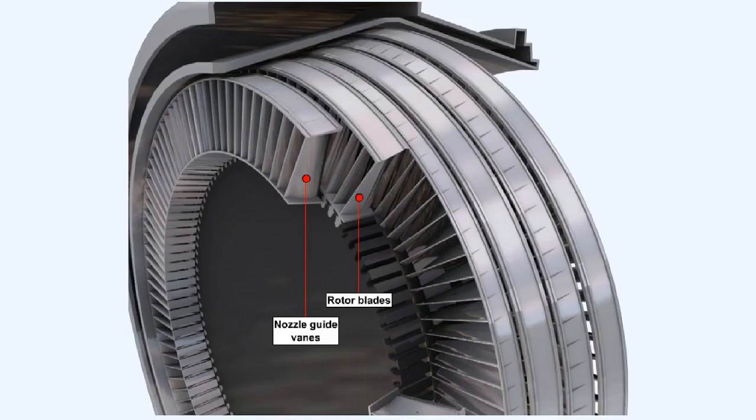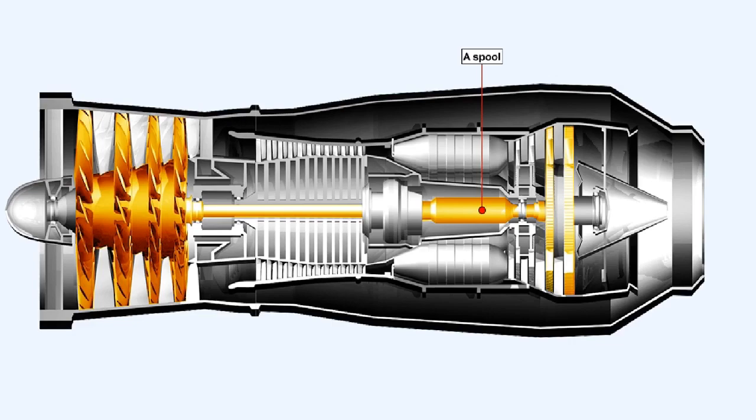We've already seen that the turbine stage consists of two elements, one row of stationary nozzle guide vanes and one row of rotating turbine blades. The complete turbine assembly comprises one or more turbine stages on one shaft which, if coupled to a compressor, forms a spool.